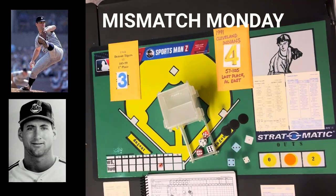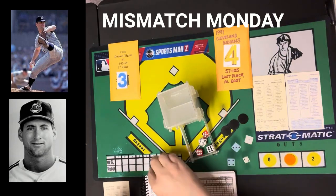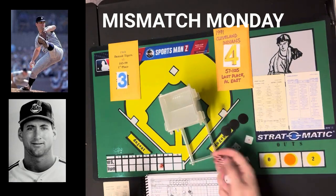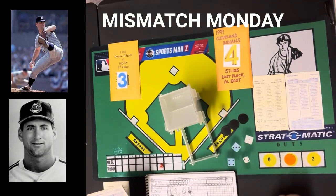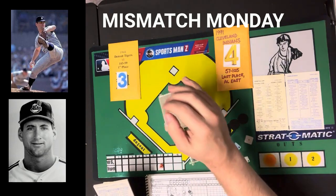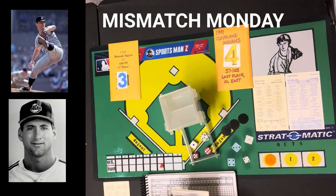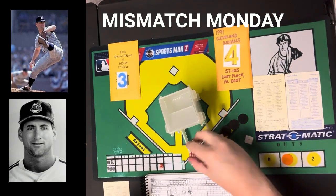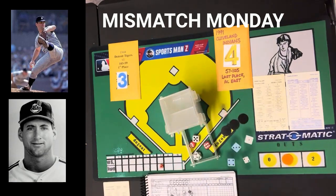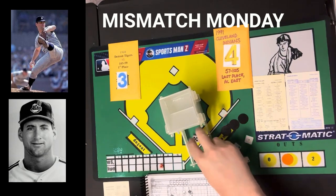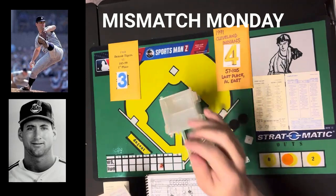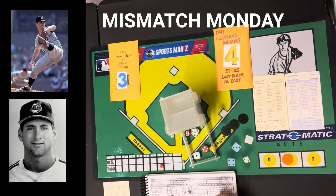Bottom of the seventh: Carlos Martinez gets a 1-11 — ground ball to short, 6-3, out. Aldrete gets a 5-9 — strikeout, McLain's fifth. Mark Lewis gets a 1-10 — pop-out to second. Cleveland maintains its 4-3 lead.